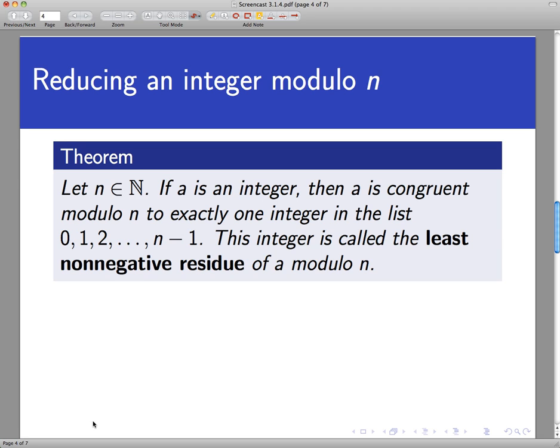use the examples to convince yourself this is true, that if you take any natural number at all, call that n, and then any integer a, then a is congruent mod n to infinitely many integers.